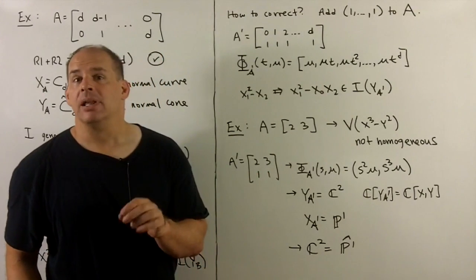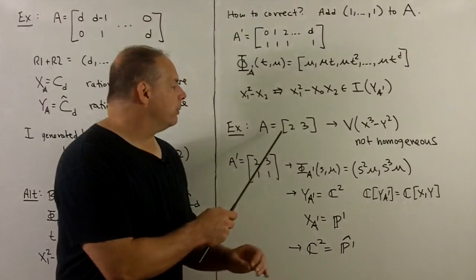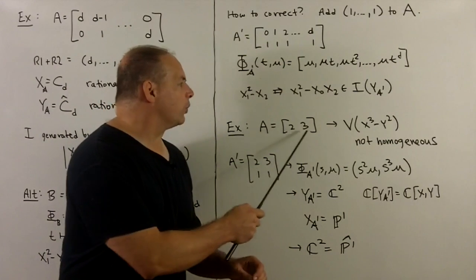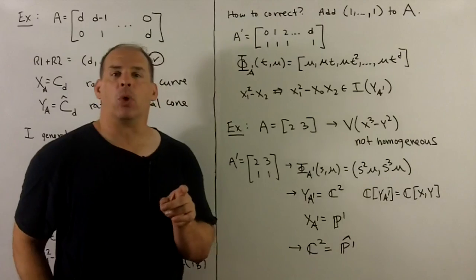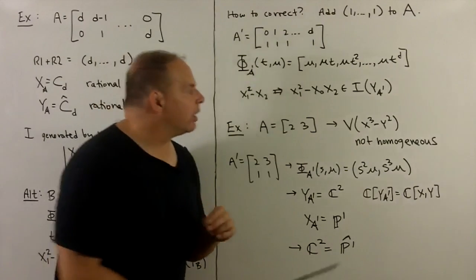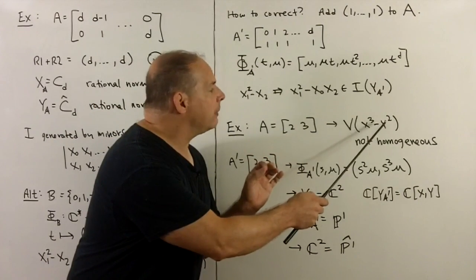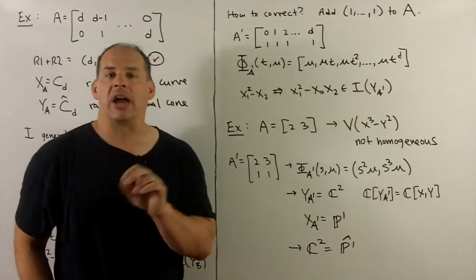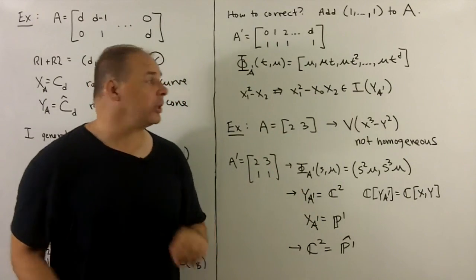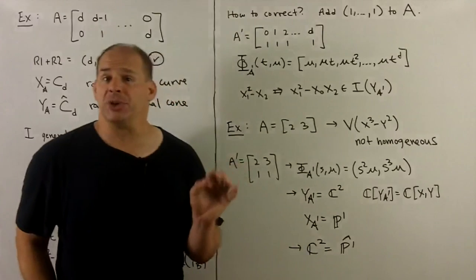Final example: let's consider A equal to [2,3]. Seen before, this is going to be the elliptic curve, given by x cubed minus y squared. So this is not going to be generated by a homogeneous polynomial, and the proposition fails.